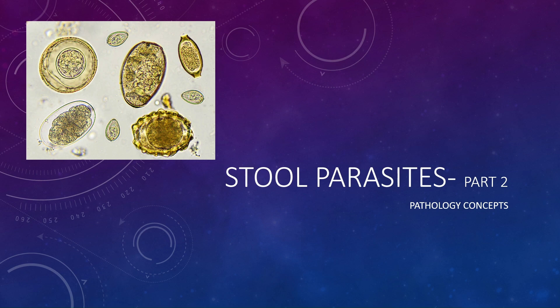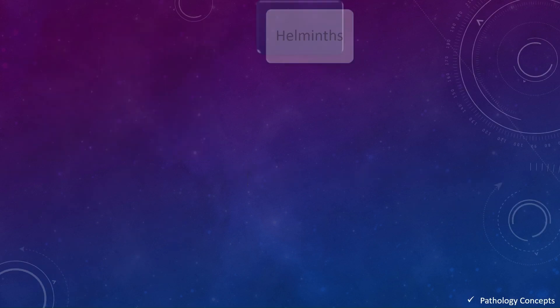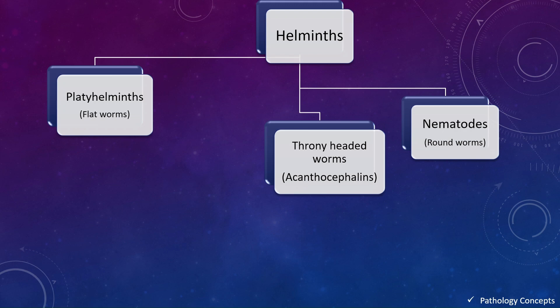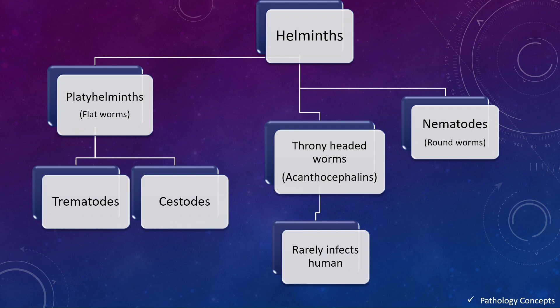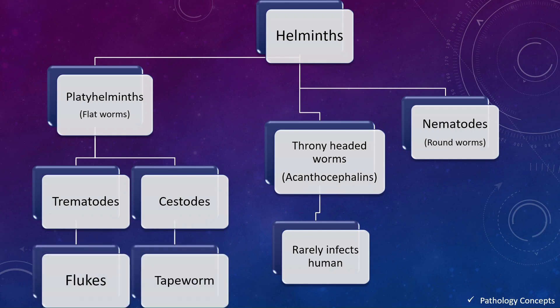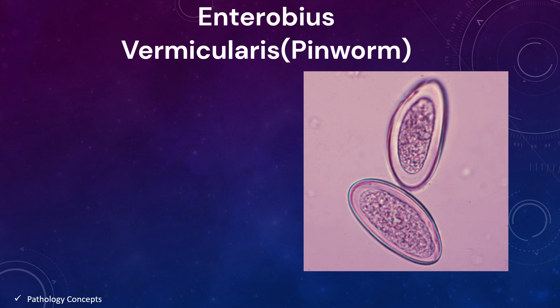Hello and welcome everyone. Today we are discussing Part 2 of stool parasites. In this video we are going to discuss helminths, which are divided into three parts: platyhelminthes, thorny-headed worms, and nematodes. The platyhelminthes are again divided into trematodes and cestodes — flukes and tapeworms. The thorny-headed worms rarely infect humans. Nematodes include roundworm, pinworm, threadworm, etc.